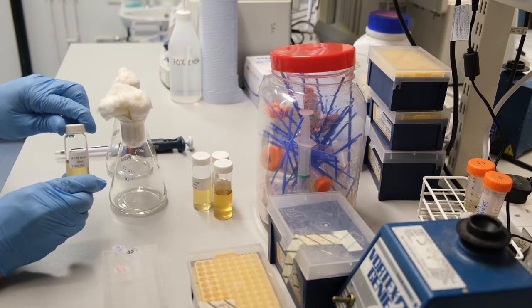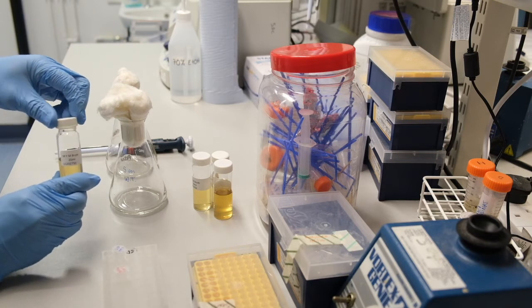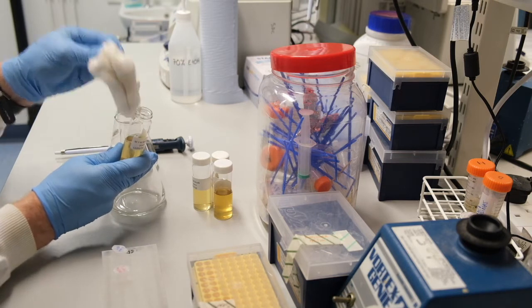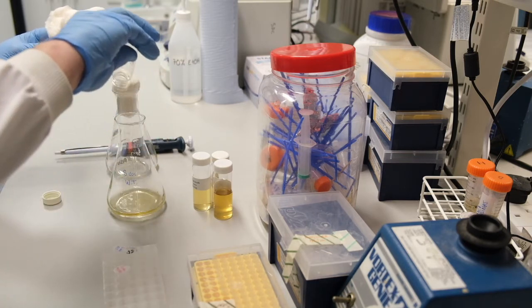After discarding the protective aluminum foil from the tops of the shake flasks, we pour a total of 40 milliliters of MYM medium into each flask.